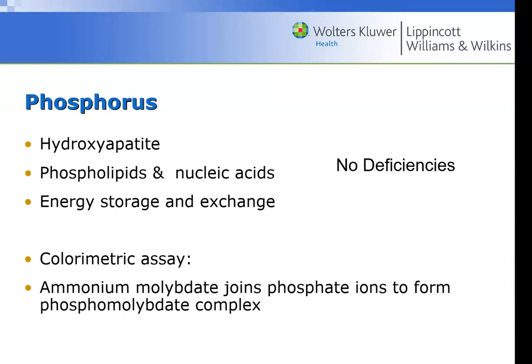Measuring phosphate levels is almost unnecessary on its own. The main reason we do them is that calcium and phosphorus levels typically move in opposite directions — if calcium goes up, phosphorus usually goes down, and vice versa. If you start seeing both rising or both falling, something unusual is going on affecting bones or kidneys. Phosphorus is measured with a colorimetric assay — ammonium molybdate forms a phosphomolybdate complex that produces a measurable color.